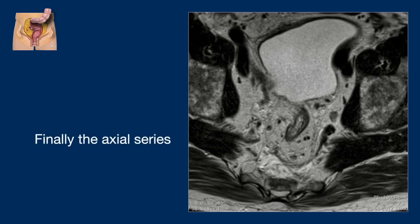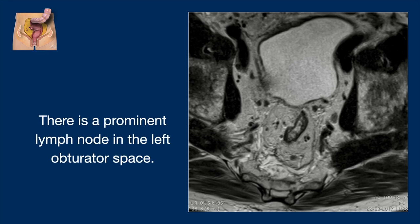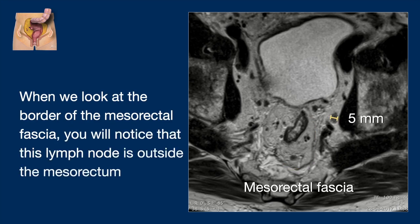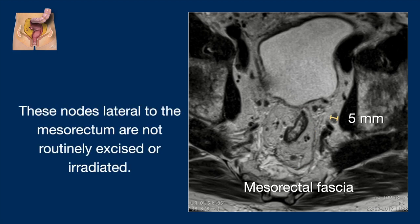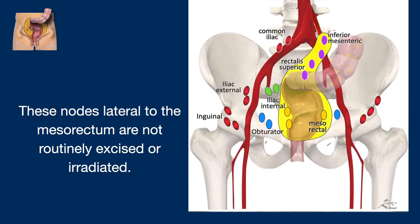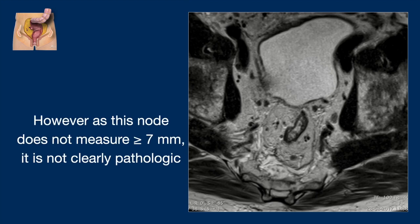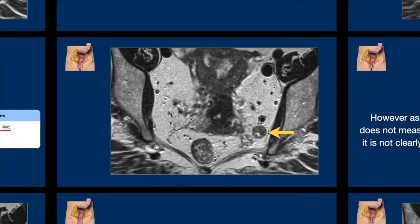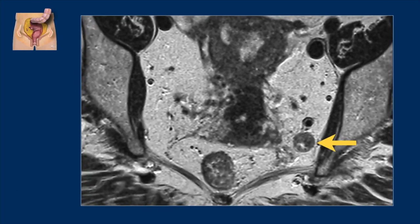In the axial series, notice a prominent lymph node on the left side. Looking at the border of the mesorectal fascia, this lymph node is outside the mesorectum, with a short axis of about 5 mm. Nodes lateral to the mesorectum are not routinely excised or irradiated. The criteria for these lateral lymph nodes differ — only size matters, and they need to be 7 mm or more. As this node does not measure more than 7 mm, it is not clearly pathologic. In contrast, in another case there clearly is a pathological lymph node just lateral to the mesorectal fascia in the left obturator space, which must be mentioned in the report.